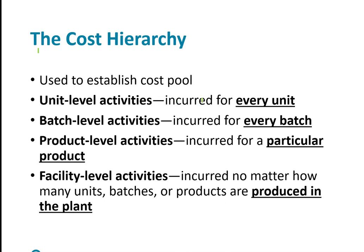Unit-level activities occur with every unit — for example, inspections or packaging, so your cost allocation base could be inspecting or packaging. For batch activities, a machine setup might represent a good allocation base. Product-level would be something like R&D design development for that particular product. And facility-level activities occur no matter how many units, batches, or products are produced in the plant — things like insurance or property taxes.